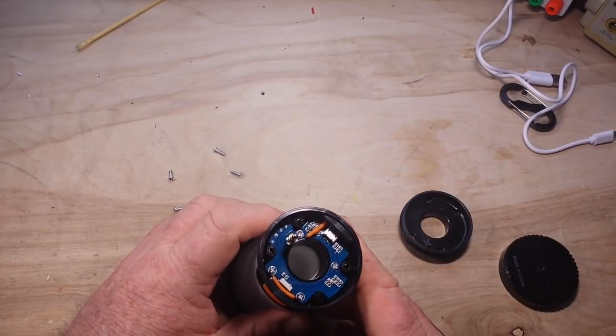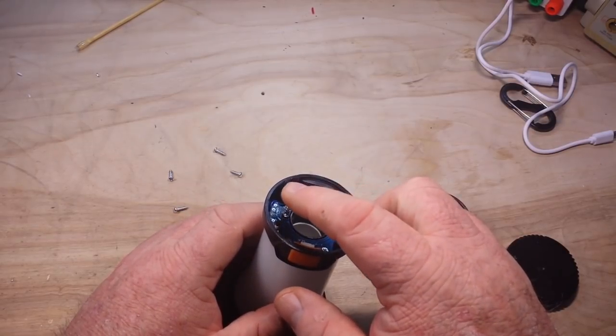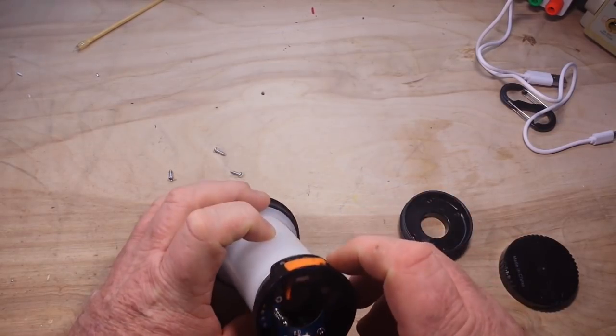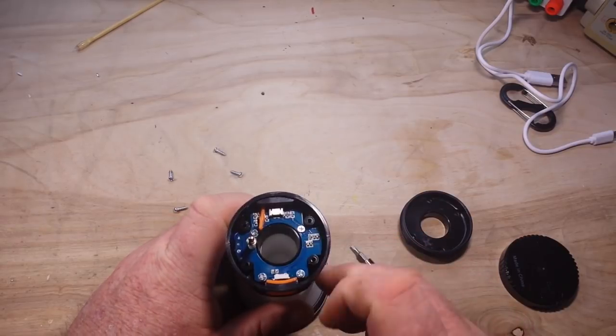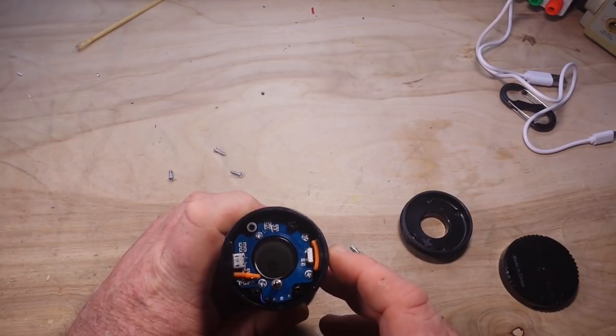Nothing but this plastic cover which reveals a circuit board. Alright, here we have one battery contact, here is our charge jack, power switch.